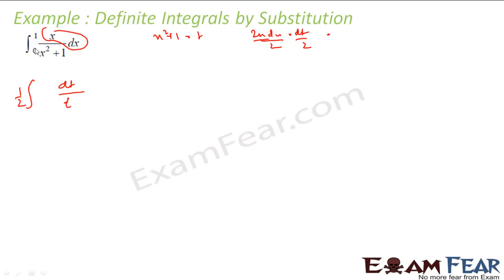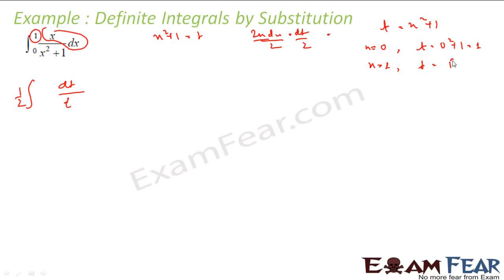But now the catch here is this substitution is for x, so I have to find the corresponding values of t. When x = 0, t = x²+1 = 0²+1 = 1, so t = 1. When x = 1, my t = 1²+1 = 2. So my t is varying from 1 to 2. My x was varying from 0 to 1, but t is varying from 1 to 2. I am taking the variation of t, not x.